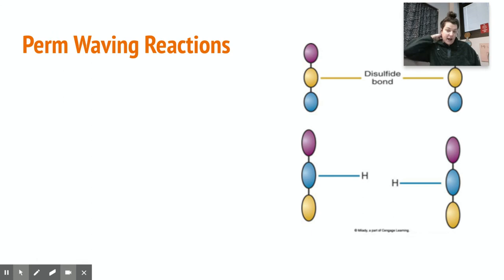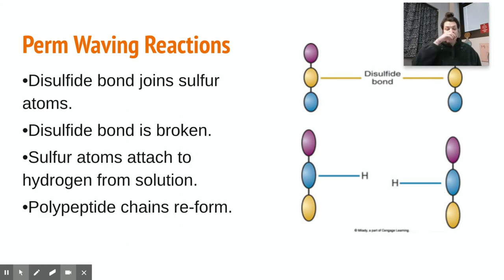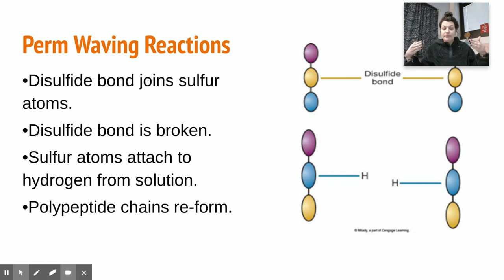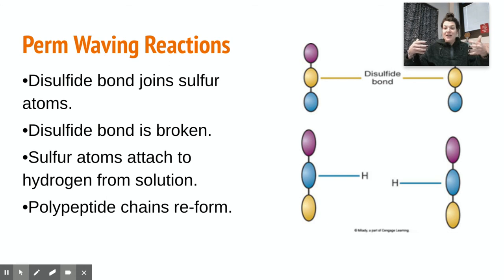Let's talk about the perm waving reaction. Thinking about the protein-protein disulfide bond — disulfide bonds join sulfur atoms, sulfur to sulfur. The disulfide bond is broken, and then the sulfur atoms attach to hydrogen from the solution. The polypeptide chains then reform. So we're breaking apart the polypeptide chains, then attaching a hydrogen so the chains can go back together in a new configuration.